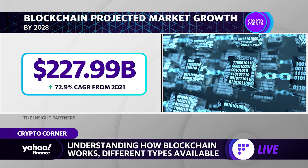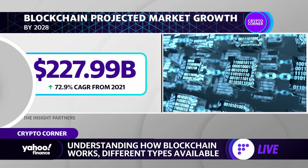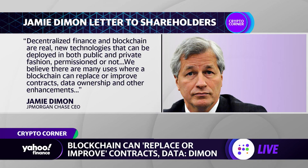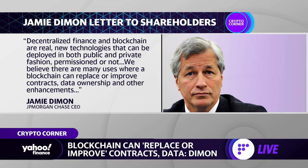Business executives are taking initiative to build solutions for their existing business practices based on the blockchain protocol. JP Morgan chairman and CEO Jamie Dimon, who has historically bashed Bitcoin, said in his annual shareholder letter for 2022 that decentralized finance and blockchain are real new technologies that can be deployed in both public and private fashion, permissioned or not. He goes on to say: 'We believe there are many uses where a blockchain can replace or improve contracts, data ownership, and other enhancements — for some purposes, however, it is currently too expensive or too slow to be deployed.'